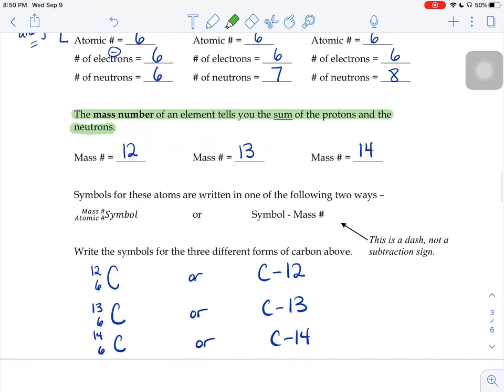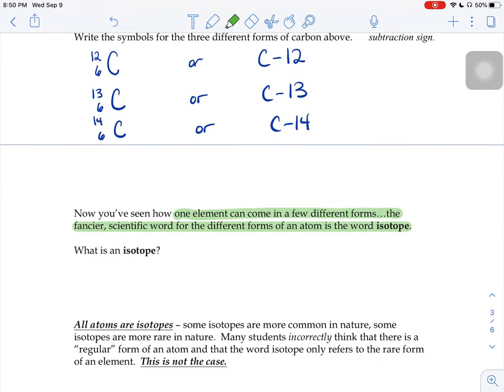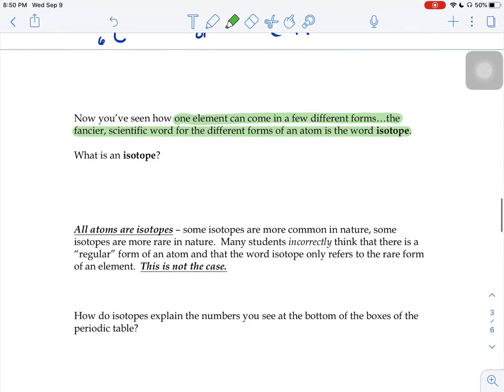But when the neutron number varies, causing a variation in the mass number, it's a different type of carbon. So, just to reiterate, an isotope is just a fancy way of saying a form of an element.